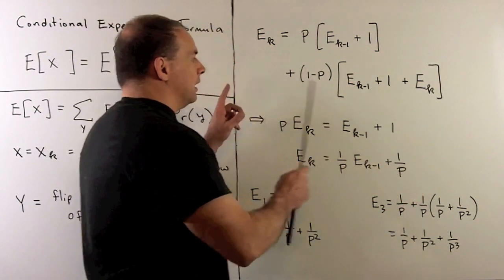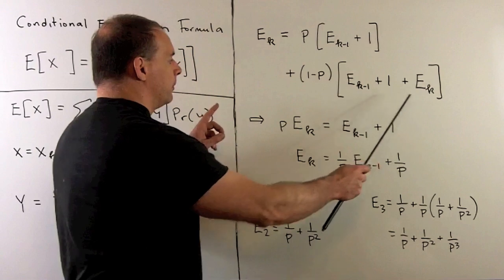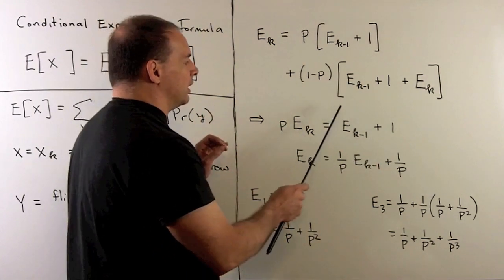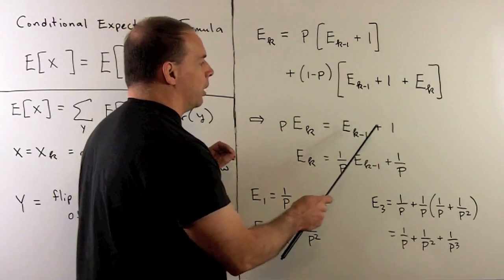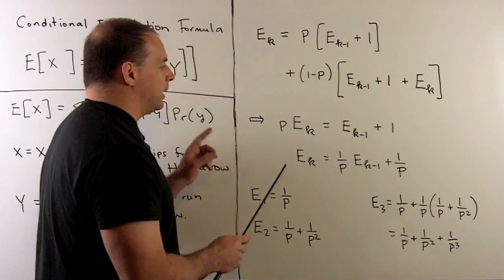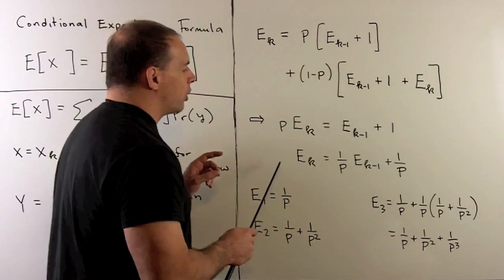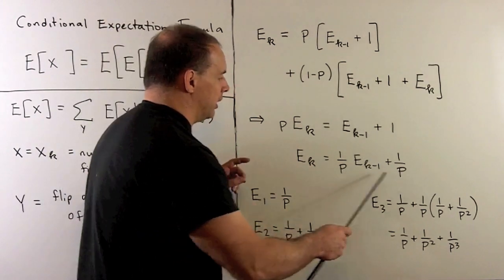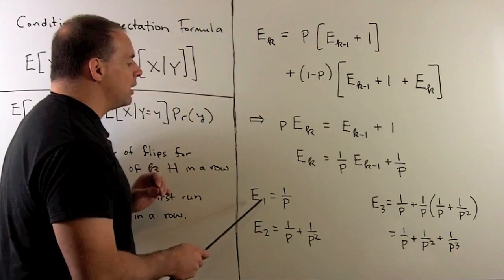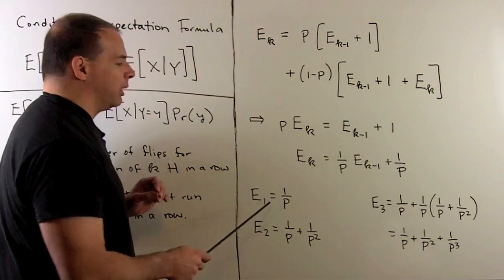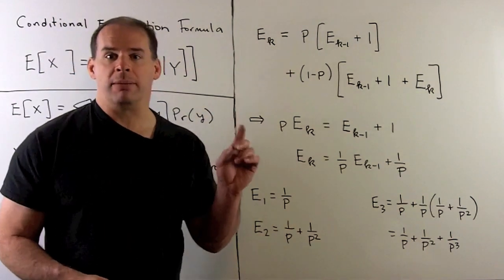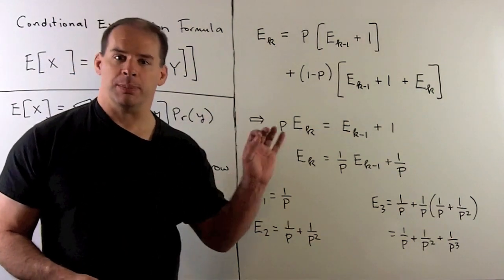If I clean this up: p · e sub k equals e sub (k-1) plus 1. Dividing by p, we get our recursive formula. We know that e sub 1 is equal to 1/p — that's just the mean of a geometric random variable — which serves as our base case.